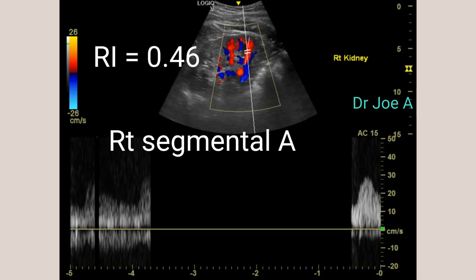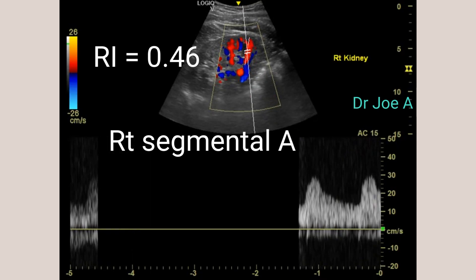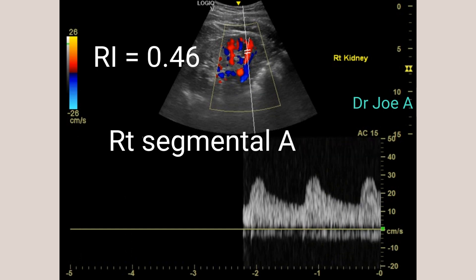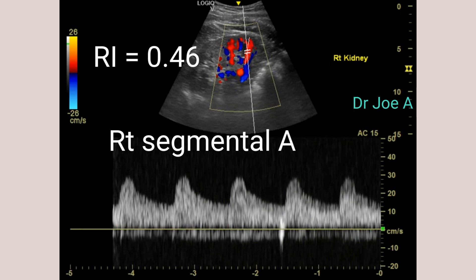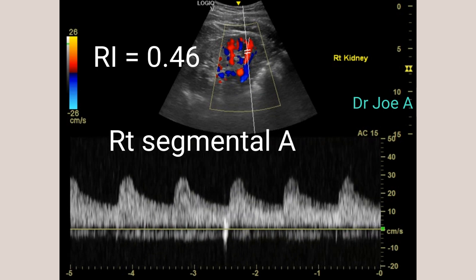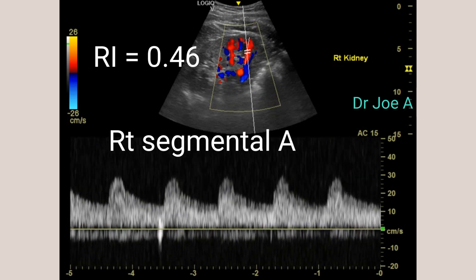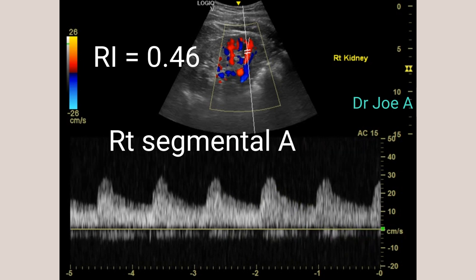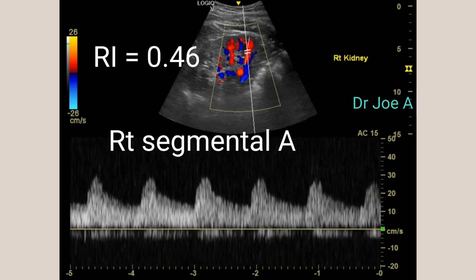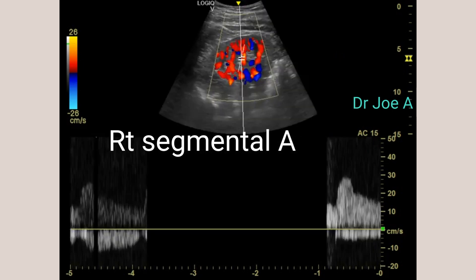Both renal arteries show a triphasic pattern with three phases: a systolic phase, a diastolic phase, and an end-diastolic phase. The segmental arteries also show a triphasic pattern, which is normal in this patient.